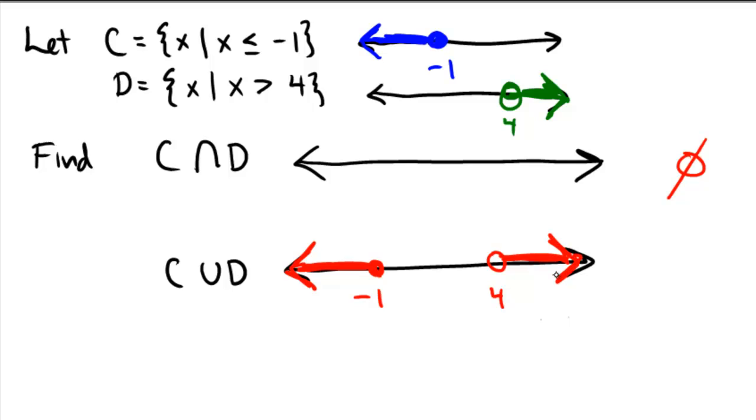So the answer for the union would be negative infinity up until negative 1, and unioned with 4 off to positive infinity. So now, why don't you pause the video and try one on your own.